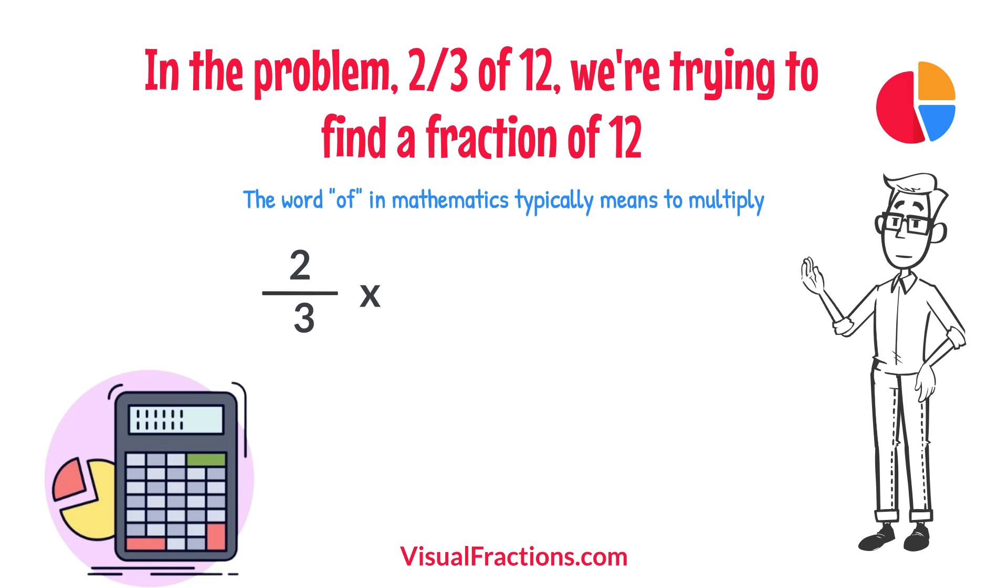To simplify the calculation, we first convert our whole number into fraction form, writing 12 as 12 over 1. This transformation makes it easier to work with our numbers as fractions.